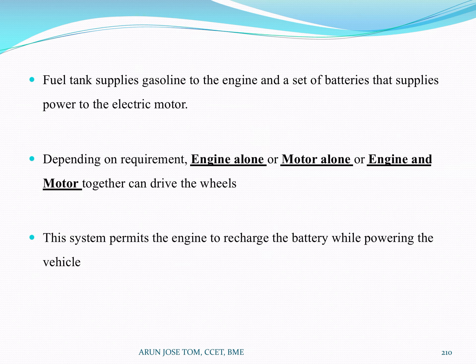In the parallel hybrid, a fuel tank supplies gasoline to the engine, and a set of batteries supplies power to the electric motor. Depending on the requirement, the engine alone, the motor alone, or the engine and motor together can drive the wheel.